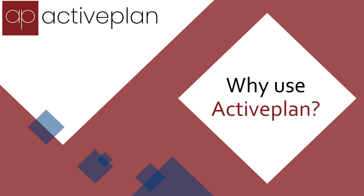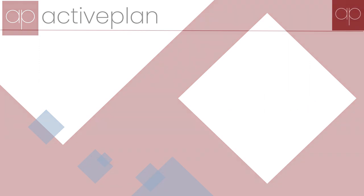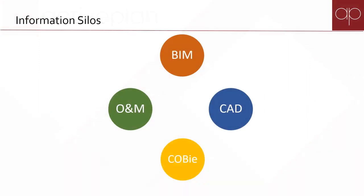ActivePlan is an interactive spatial model that's driven from an asset database in the cloud. It's formed by integrating or federating BIM models, CAD files, Excel, COBE, O&Ms and documents, tying together what are normally disconnected silos of information that are stored in common data environments or SharePoint, meaning people have to search through and interpret and potentially make mistakes.